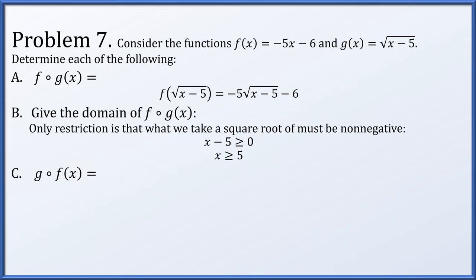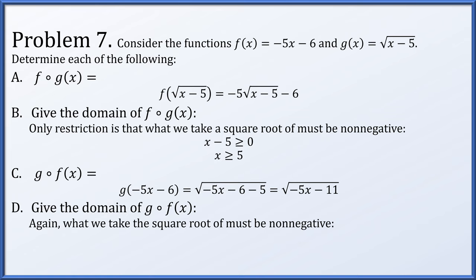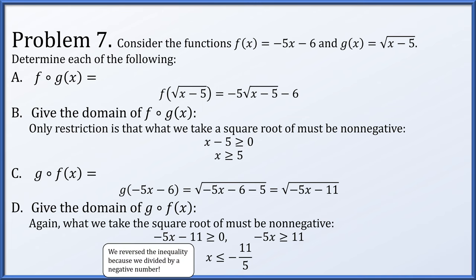For g(f(x)): f(x) = -5x - 6 is plugged into g, giving √(-5x - 6 - 5) = √(-5x - 11). The domain requires -5x - 11 ≥ 0. Adding 11: -5x ≥ 11. Dividing by -5 flips the inequality, so x ≤ -11/5. Remember: when you multiply or divide an inequality by a negative number, it must reverse the direction of the inequality.